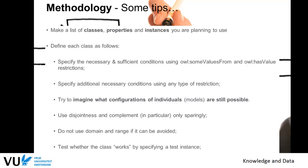Do not use domain and range restrictions if they can be avoided. They might be useful for generic classes when modeling data, but for modeling a domain this is over-commitment, and you will hardly find many properties where you can really justify a domain and range restriction. Test whether your classes really work by using test instances and checking whether what happens is really what you expect — for example, test whether your model correctly makes a person a Nobel Prize winner.